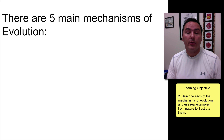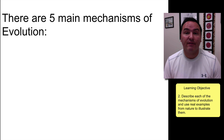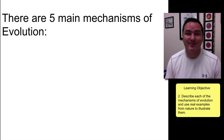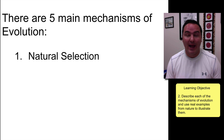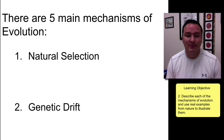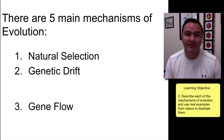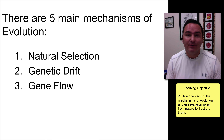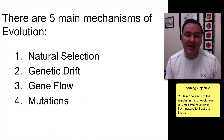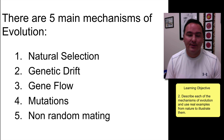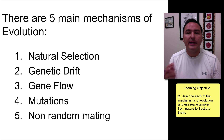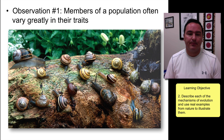In this lecture, we're going to be examining the five mechanisms of evolution, which are natural selection, genetic drift, gene flow, mutations, and finally non-random mating. So let's look at each one sequentially.